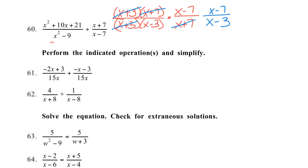Number 61 is adding, and my denominators are the same, so all I need to do is combine like terms in the numerators. So negative 2x minus x is negative 3x, 3 minus 3 is 0, over 15x. The denominator stays the same, and then I have to simplify. My x's divide out, and 3 goes into 15 five times, so we end up with negative one-fifth. Remember, if anything divides out on the numerator completely, you're left with a 1 on top.